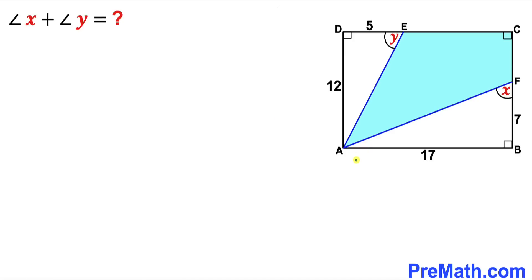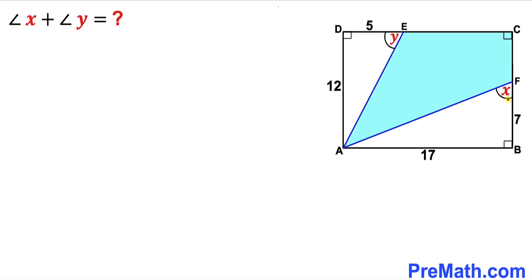Welcome to Pre-Math. In this video we have got rectangle ABCD such that its side lengths are 12 and 17 units. Moreover, side length DE is 5 units whereas line segment FB is 7 units. Now we are going to calculate the sum of angles X and Y as you can see over here.